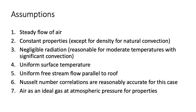Our first assumption is steady flow of air over the roof. Second, constant properties — note that density must be changing for natural convection to occur, but we use density at the mean temperature for calculations. Third, negligible radiation from the roof, a reasonable assumption for moderate temperatures combined with significant convection. Fourth, constant surface temperature. Fifth, uniform free stream flow parallel to the roof. Sixth, reasonably accurate convection coefficients using ideal Nusselt number correlations. Seventh, air is an ideal gas at atmospheric pressure for property lookup. We should expect accuracy of about plus or minus 20% for our results.